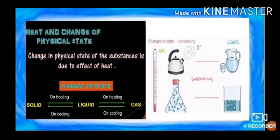Heat and changes of physical state. The physical state of a substance is an effect of the amount of heat in it. On gaining heat, the substance changes from solid to liquid and liquid to gas. On the other hand, when the substance cools or loses heat, it changes from gaseous to liquid and liquid to solid state. Change in physical state of a substance is due to effect of heat. Heating means gaining heat while cooling is losing heat.